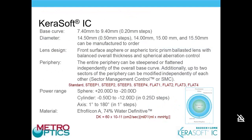Another feature is that the periphery can be steepened or flattened independently of the overall base curve. For challenging corneal transplants, which often have an oblate profile — flatter centrally and steeper peripherally — a reverse geometry fitting approach is needed. This soft lens can be created in a reverse geometry profile by making the peripheral curve steeper than the base curve, or flatter in cases of a nipple cone with a flat periphery.